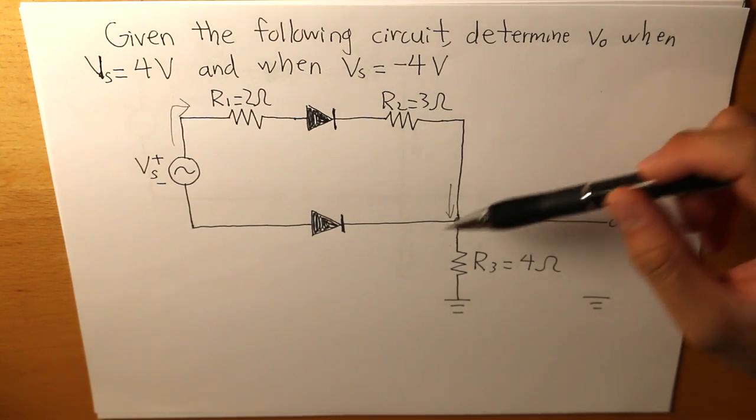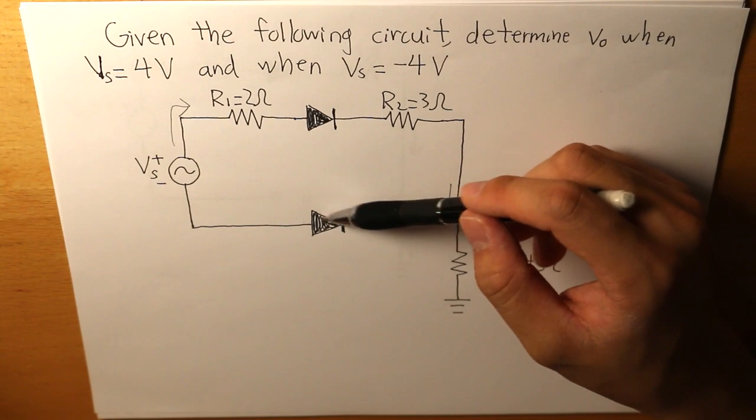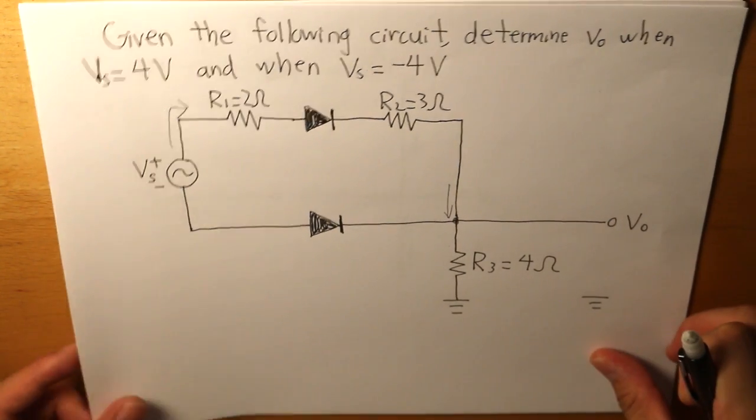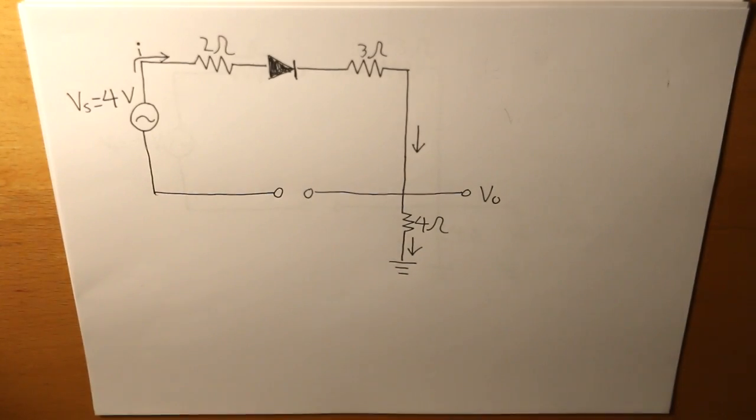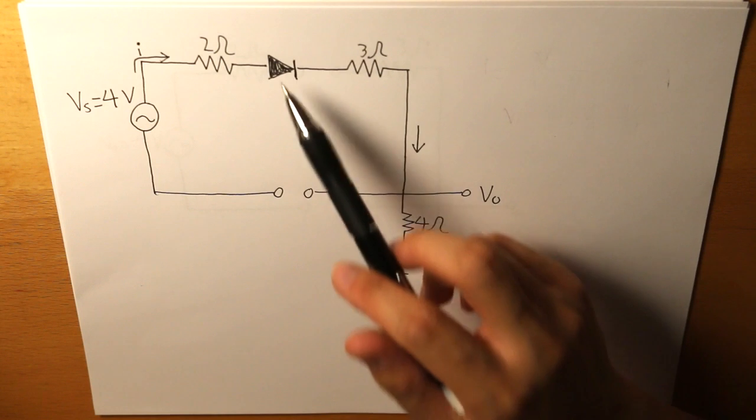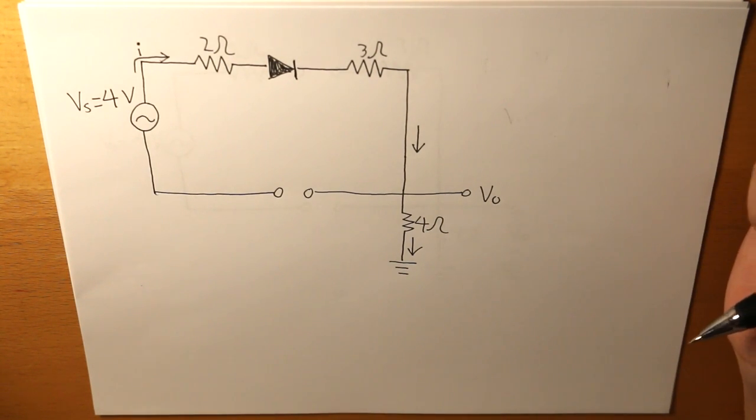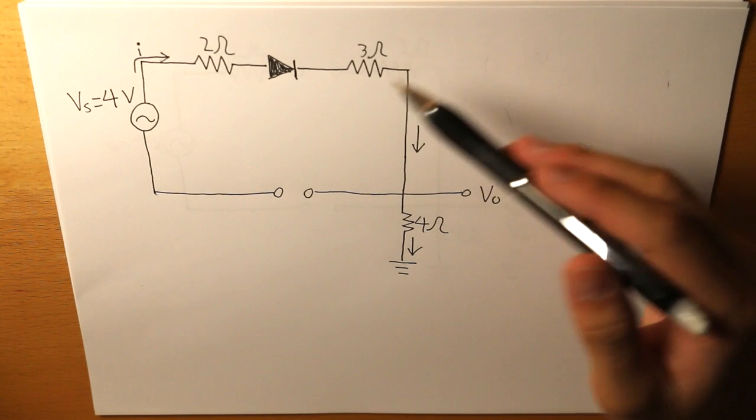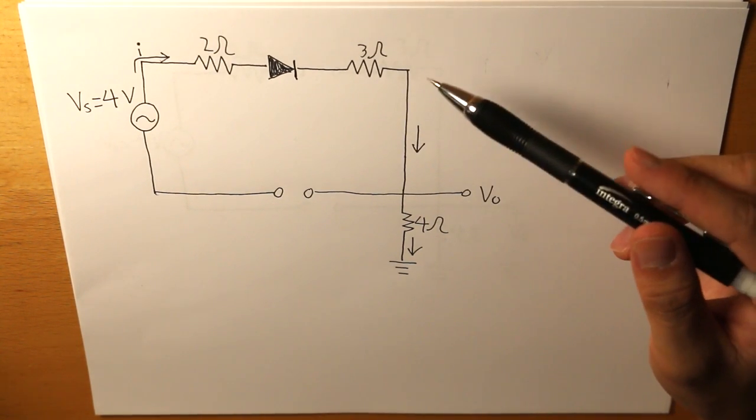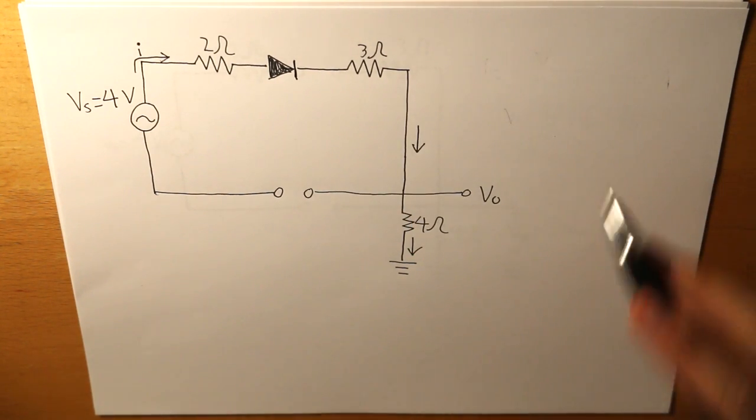And the reason being is because it cannot travel through this node to this wire since this diode is blocking it. And this is how it will look like. This diode would be open, and this diode would be closed, turned on. And since we are able to fully identify where the current is traveling to, we can calculate the current and then determine what our output voltage is.